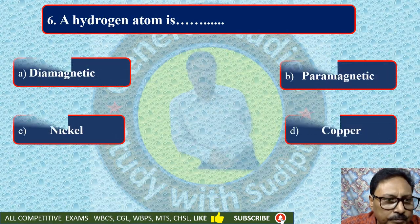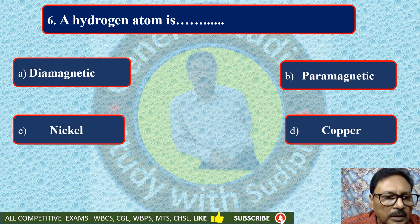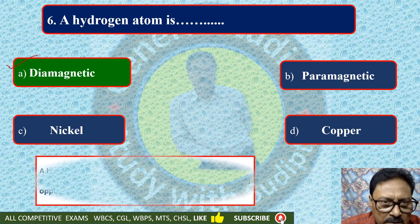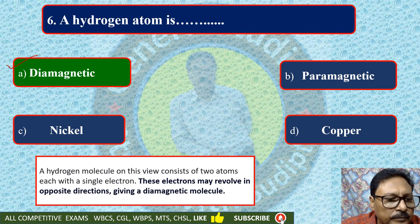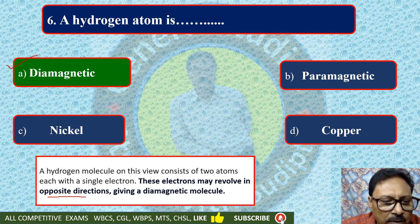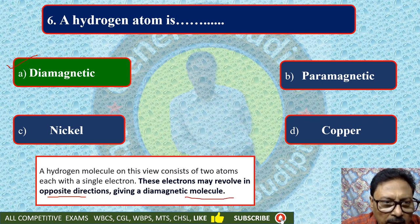Hydrogen atom is — diatomic, diamagnetic, paramagnetic, nickel, or copper. It is diamagnetic. Hydrogen atom is diamagnetic. This is a very important question. A hydrogen molecule contains two atoms, each with a single electron. These electrons may revolve in opposite directions, giving a diamagnetic molecule. That is why hydrogen atom is diamagnetic.